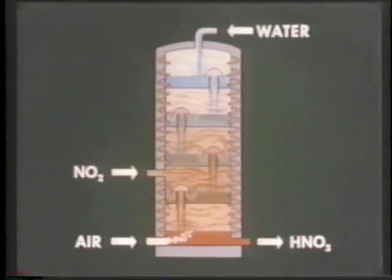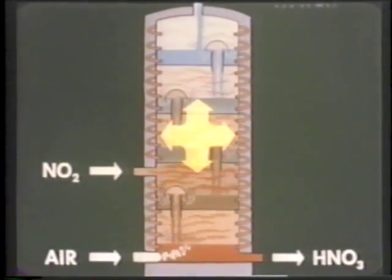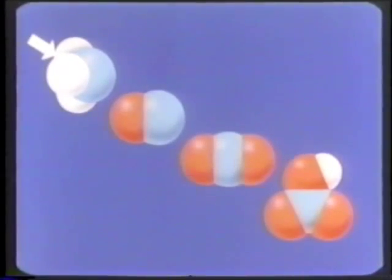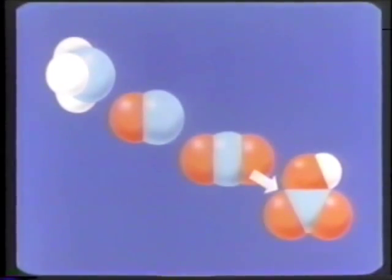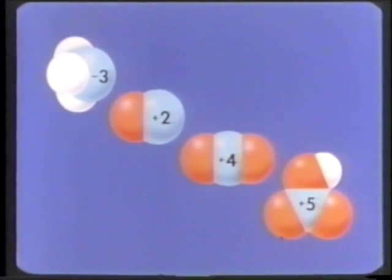And finally, since we are forming a liquid from gases, the operation takes place at higher than atmospheric pressure. To review: we oxidized ammonia through NO and NO2 to nitric acid. In stages, we oxidized the nitrogen atom in ammonia from -3 to +2, to +4, and finally to +5, forming nitric acid.